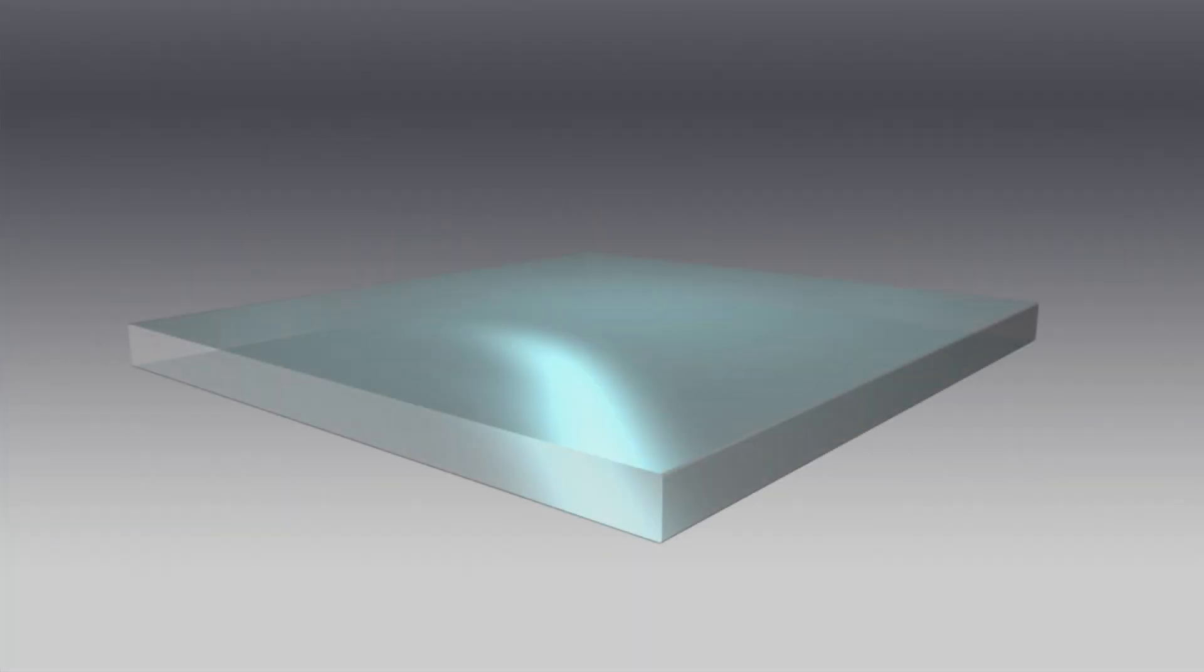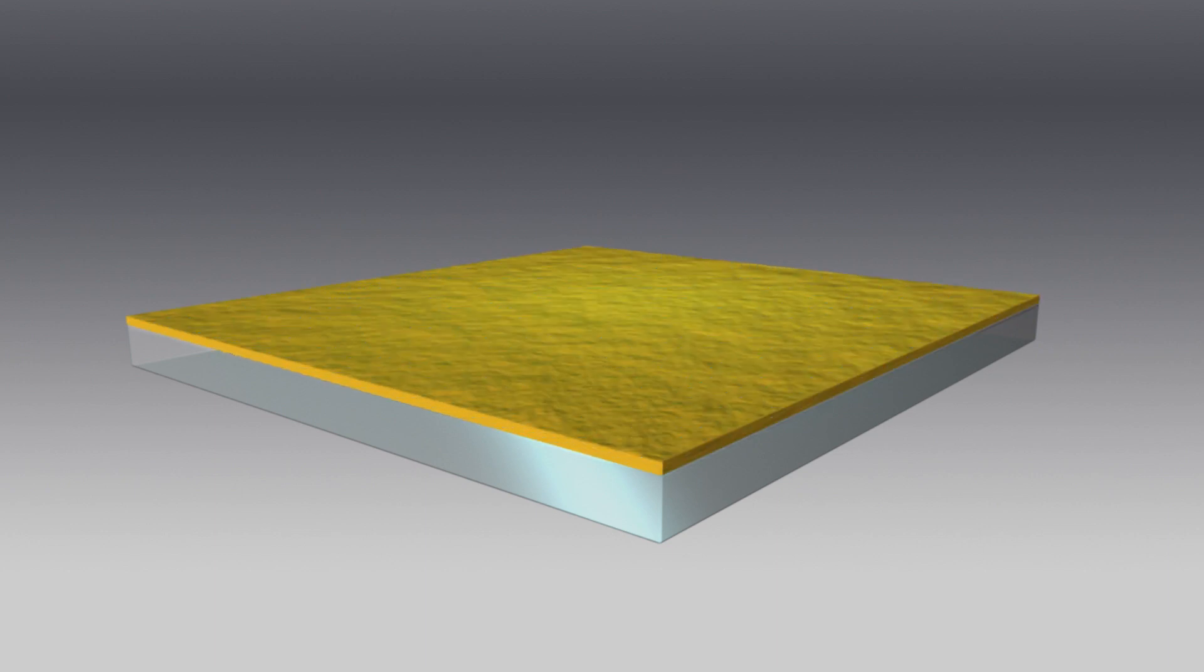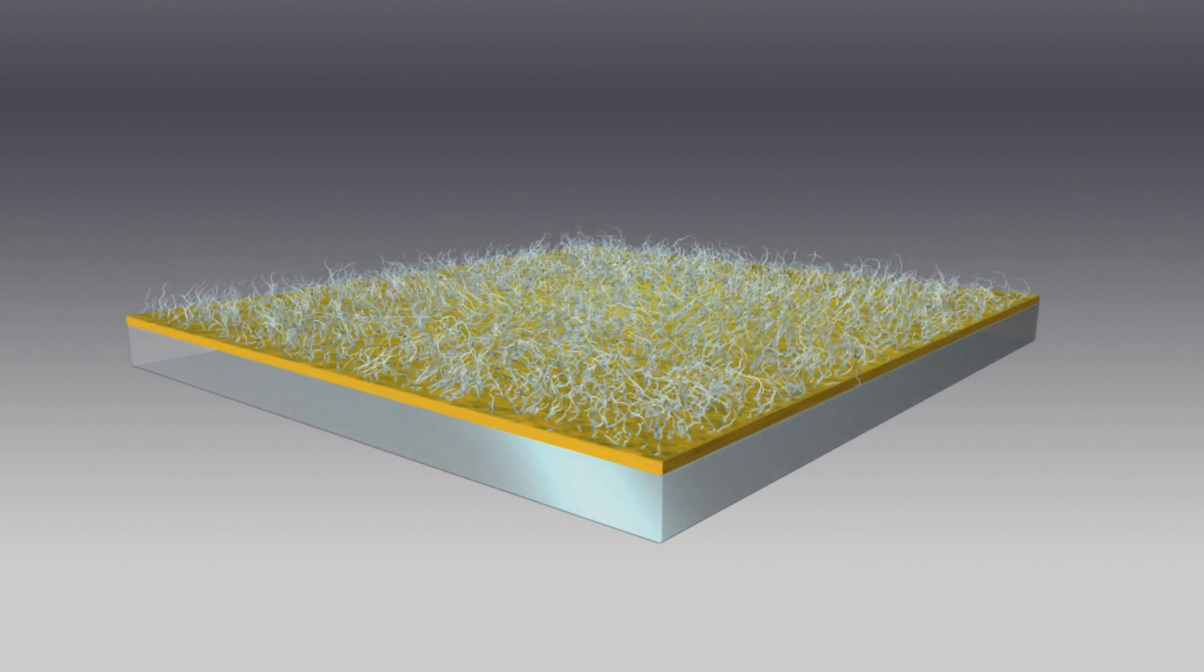A glass slide coated with a thin gold film creates the sensor surface. For most applications, a dextran matrix covering the gold film acts as a substrate to which molecules can be attached and provides a hydrophilic environment for the interaction.